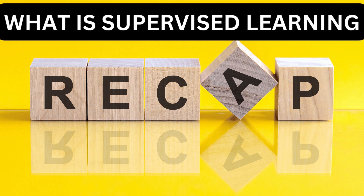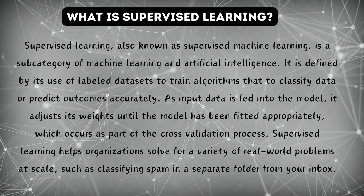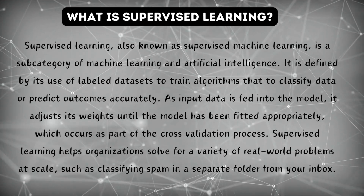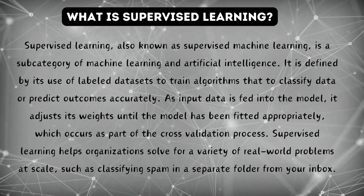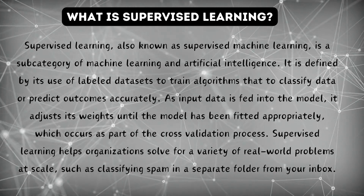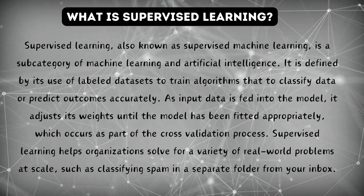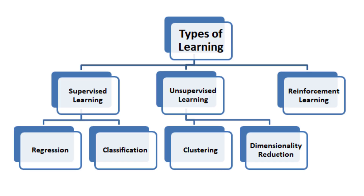Hello, everyone. Let's do a quick recap of what is supervised learning. Supervised learning, also known as supervised machine learning, is a subcategory of machine learning and artificial intelligence. It is defined by its use of labeled datasets to train algorithms that classify data or predict outcomes accurately. Types of supervised learning are classification and regression model algorithms.